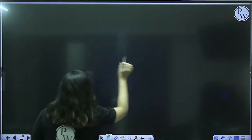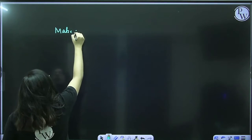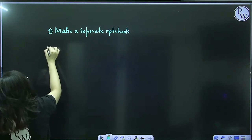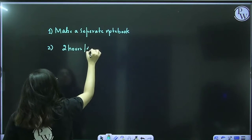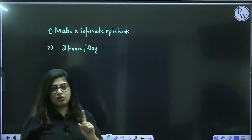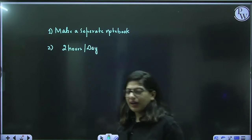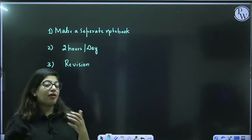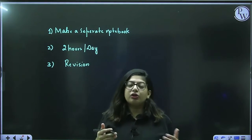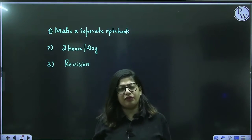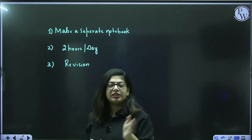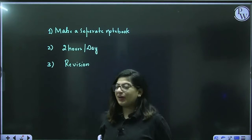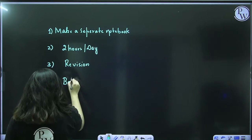Your role: first, make a separate notebook. Second, give two hours per day to zoology — two hours for revision and doing all assignments. Third, revision is a must. Even if you studied something one day, revise it the next day and keep revising. If it took two hours on day one, it will take half an hour on day two, then ten minutes, then five minutes — the revision time keeps reducing.